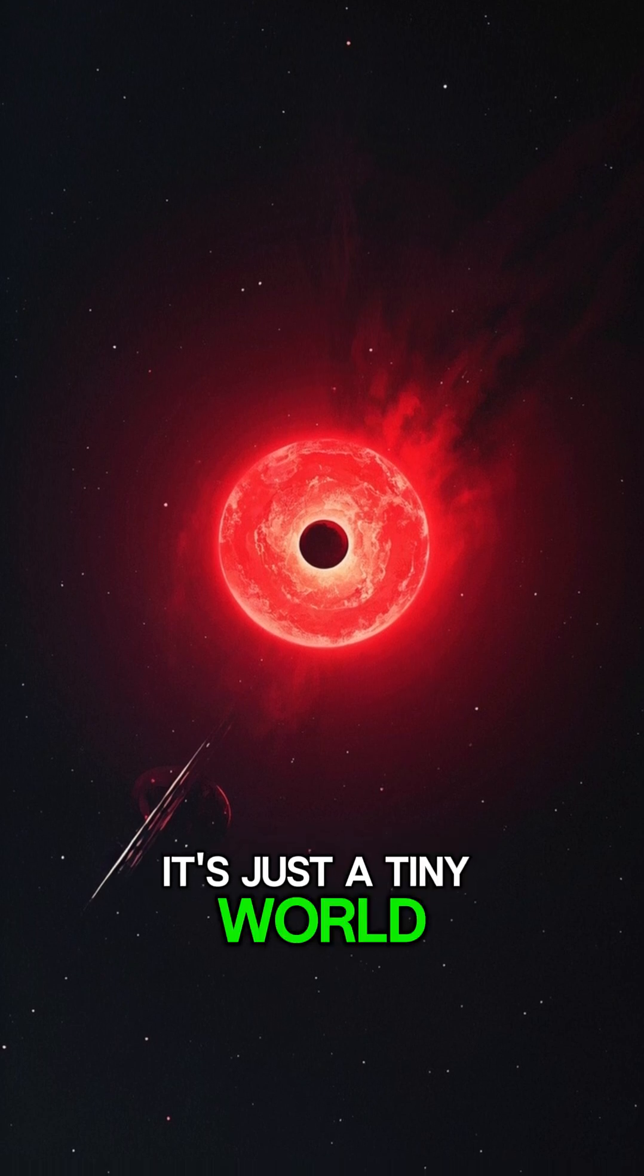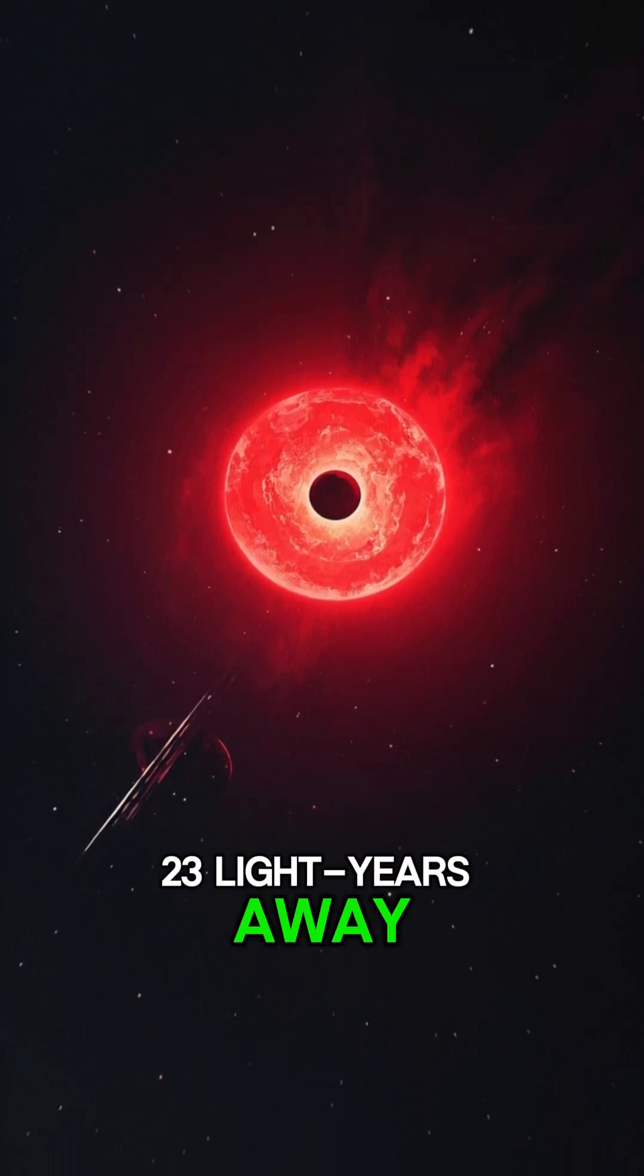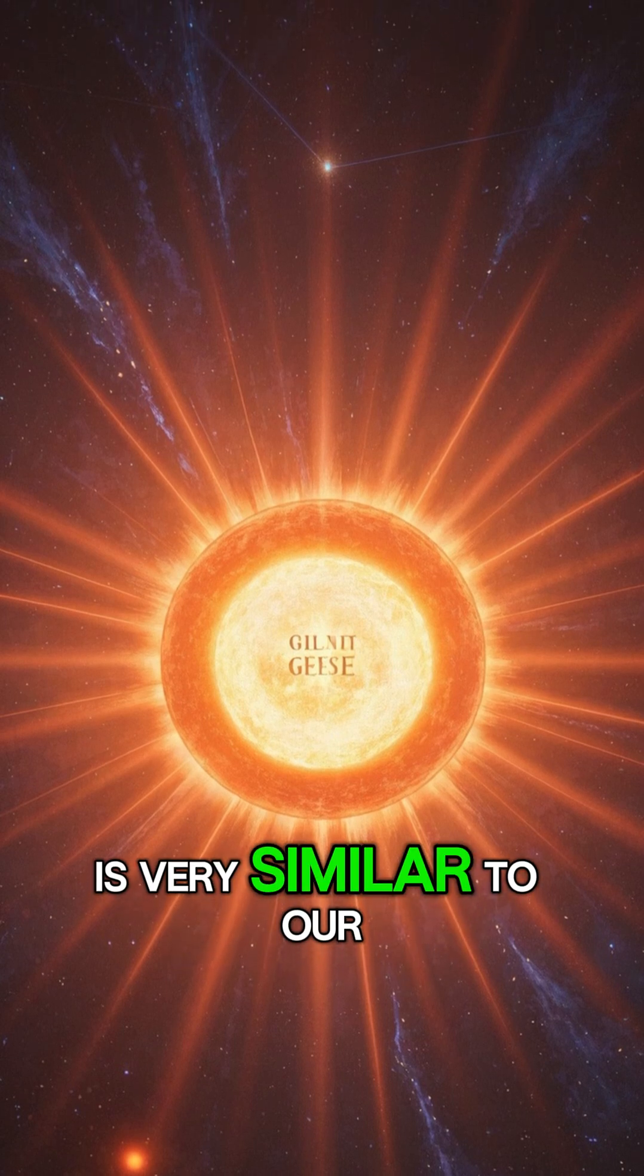It's just a tiny world orbiting a red dwarf star just 23 light years away. The star, Gliese 667 c, is very similar to our sun.